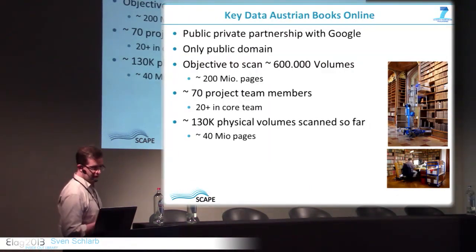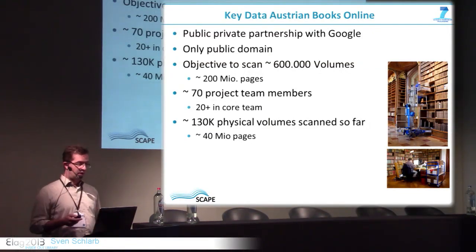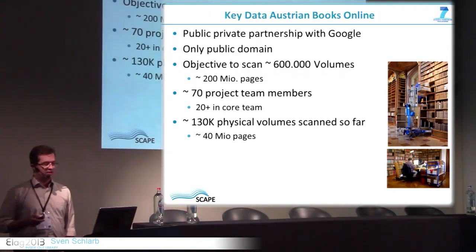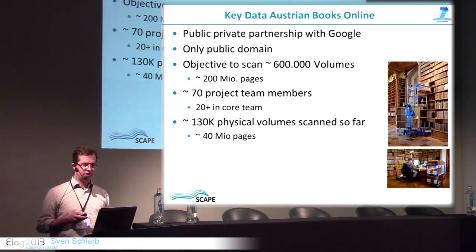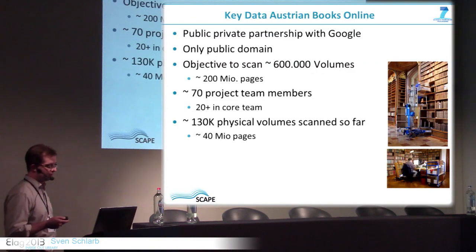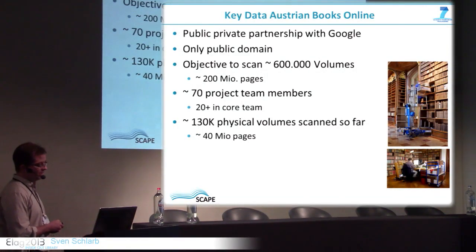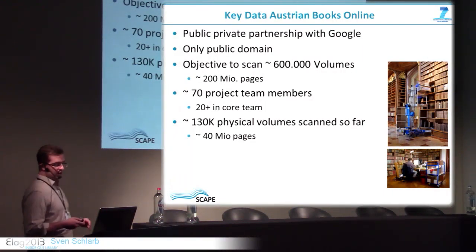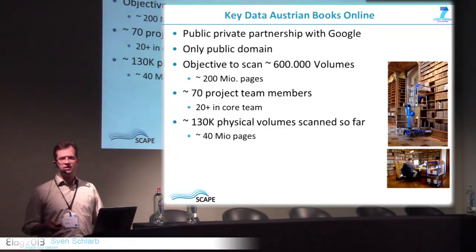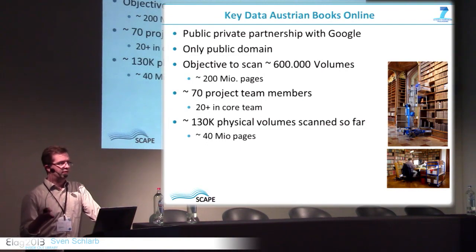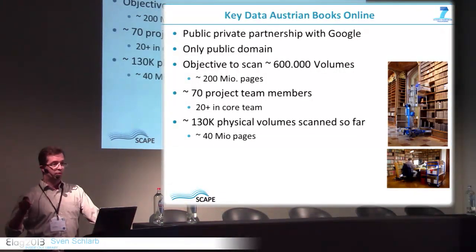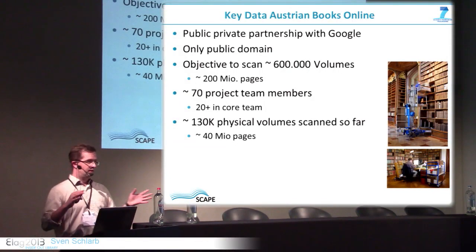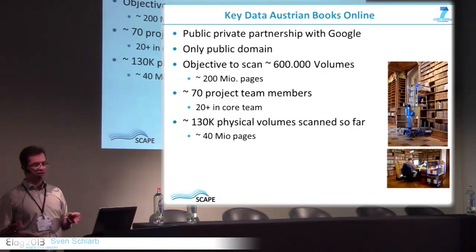Some key data about the Austrian Books Online project: it's a public-private partnership with Google where only public domain material is scanned. The objective is to scan 600,000 books over six years; we've passed two years with four remaining, totaling about 200 million pages. Currently 70 project members are involved, 20 in the core team. So far we have scanned 130,000 books with about 40 million pages. Whether 130,000 books is 'big data' depends on granularity — a book has pages, paragraphs, lines, words, characters — and at that level you face big data and most probably cannot handle it without such a system.